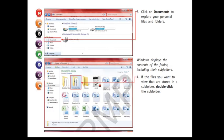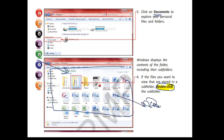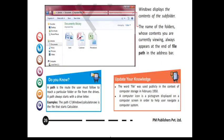As I told you, we can store any form of documents in the documents folder. In order to open the documents folder, you have to double-click it. The moment you double-click it, you will see this kind of screen appearing — this is the view of the documents folder. Inside this, all the documents are present. The name of the folder whose contents you are viewing appears at the end of the file path.